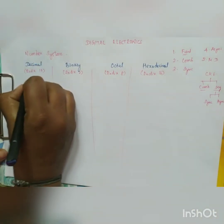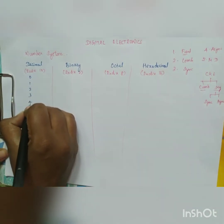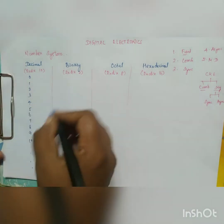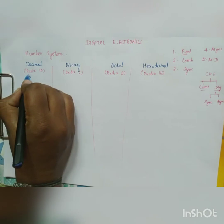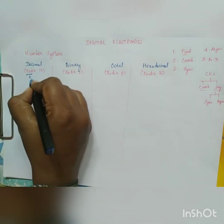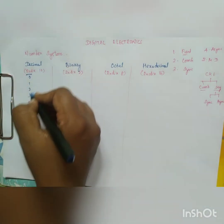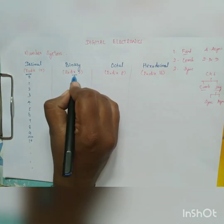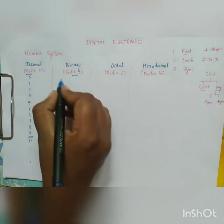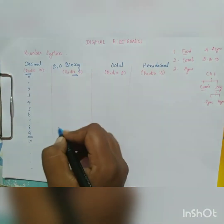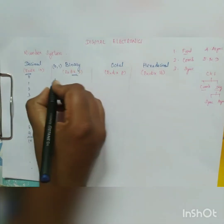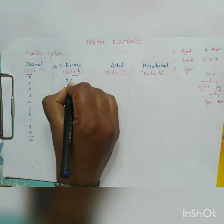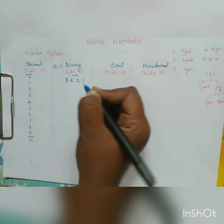In the decimal number system, the digits are 0, 1, 2, 3, 4, 5, 6, 7, 8, 9, 10, and so on. For binary, we know it consists of only 0s and 1s. To represent decimal numbers in binary, we use the 8421 code. For decimal 0, the binary is 0000.